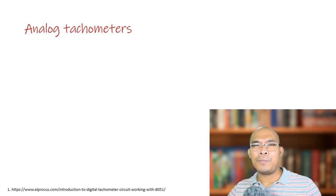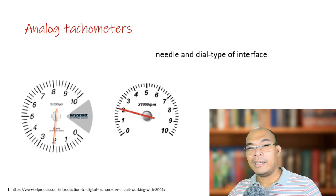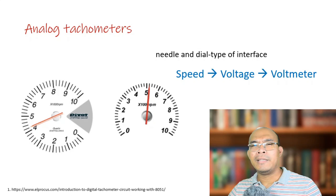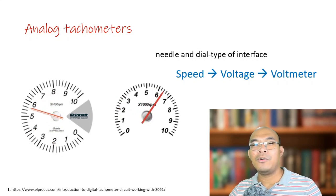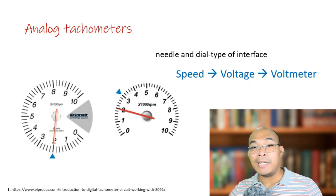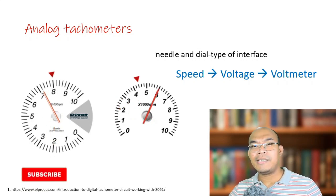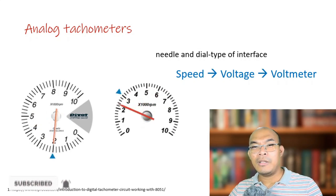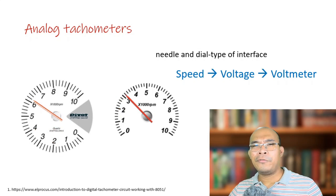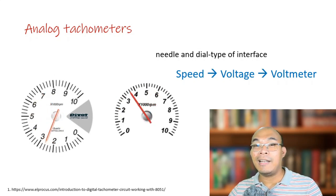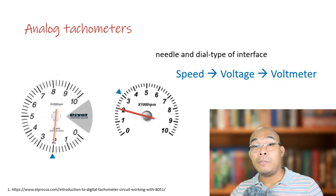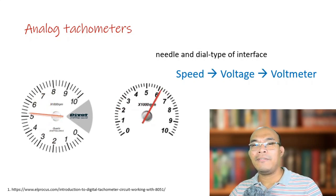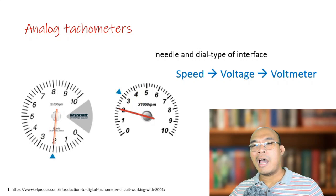An analog tachometer is comprised of a needle and a dial-type interface. Here, the speed is converted to voltage, then the value is displayed on an analog voltmeter calibrated to measure speed. In other words, the moving needle measures voltage, similarly to when you use an analog multimeter, but instead of voltage readings, the deflection of the needle is calibrated to measure RPM. Hence, if the speed of the rotating object increases, the output voltage of the tachometer will be higher, resulting in a bigger deflection of the needle, indicating higher rotational speed.